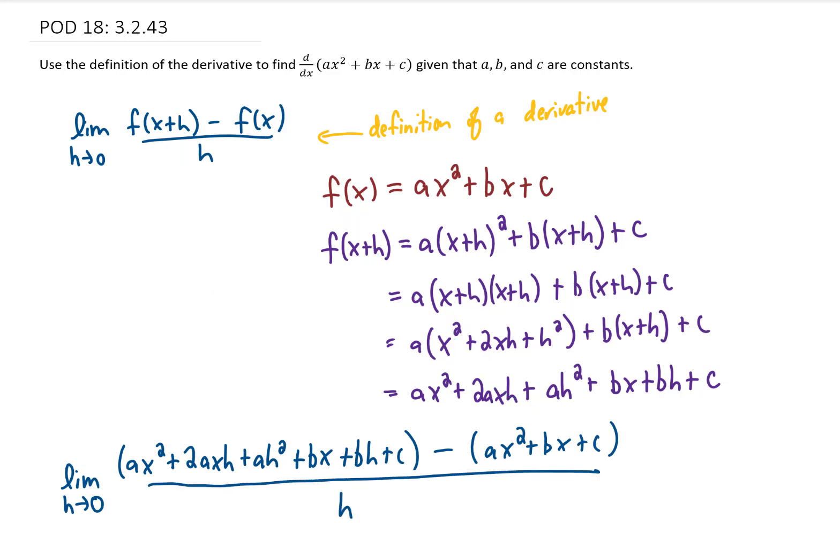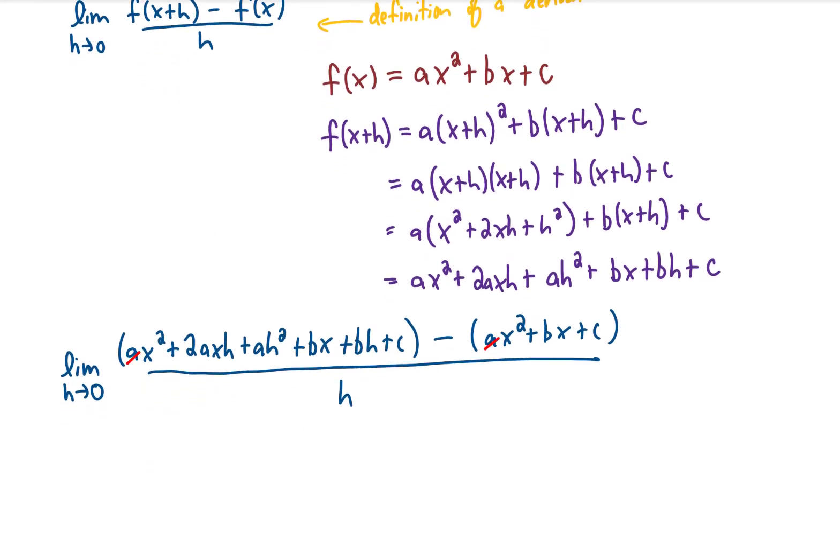And let's see what terms cancel. It looks like our ax squared cancels, our bx cancels, and our c cancels. That leaves us with the following terms.